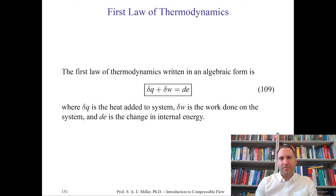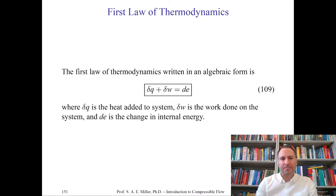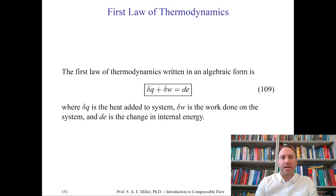This is a bit of a review class for many of you, but please pay attention to signs and terminology and how they fit in with compressible flow. We first look at the first law of thermodynamics, written in algebraic form as delta Q plus delta W equals dE. Delta Q is the heat added to the system, delta W is the work done on the system, and dE is the change in internal energy, typically written from state 1 to 2.